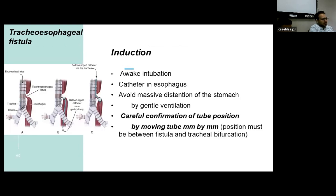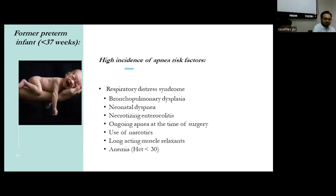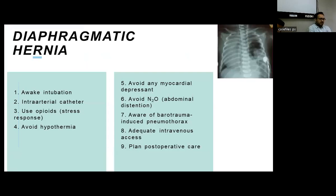For TEF, the anesthetist performs awake intubation, catheterizes the esophagus, avoids massive gastric distension by gentle ventilation, and carefully confirms tube position by moving it millimeter by millimeter. The position must be between the fistula and the tracheal bifurcation. In pre-term infants, risk factors for apnea include respiratory distress syndrome, bronchopulmonary dysplasia, neonatal sepsis, necrotizing enterocolitis, ongoing apnea at time of surgery, use of narcotics, long-acting muscle relaxants, and anemia with hematocrit less than 30. For diaphragmatic hernia, the anesthetist performs awake intubation, prefers an intra-arterial catheter, uses opioids, avoids hypothermia, avoids bowel distension, avoids nitrous oxide which leads to abdominal distension, is aware of barotrauma which can induce pneumothorax, ensures adequate intravenous access, and plans adequate post-operative care.